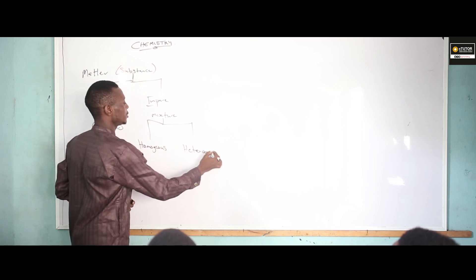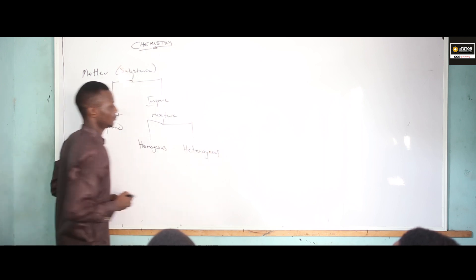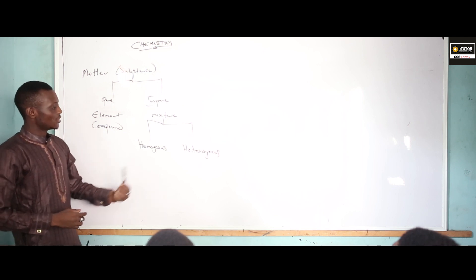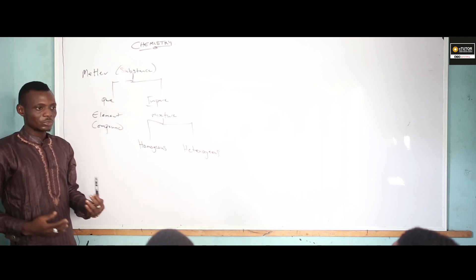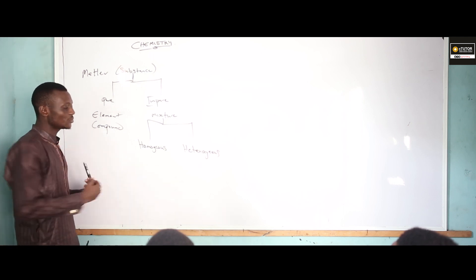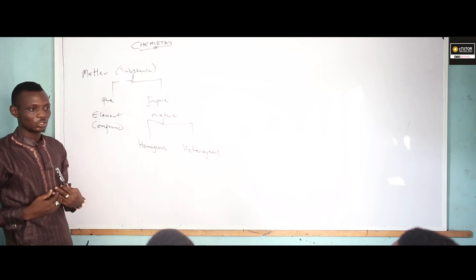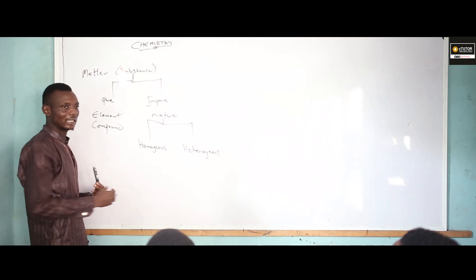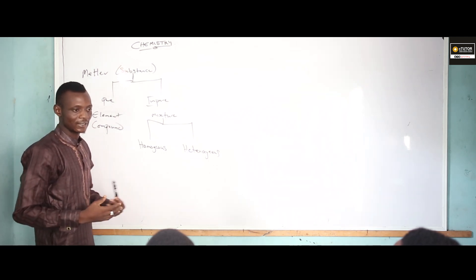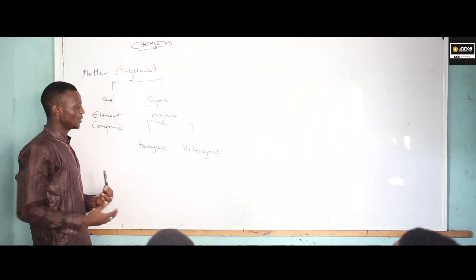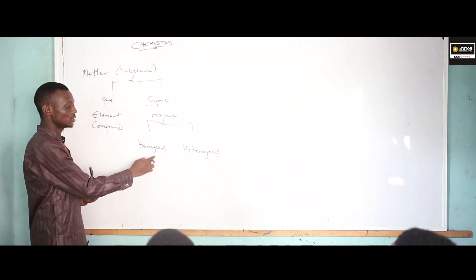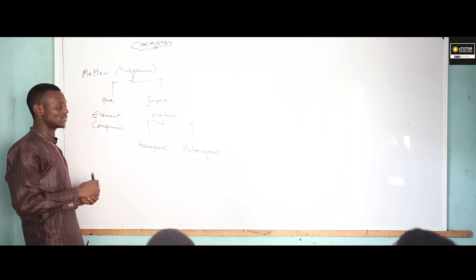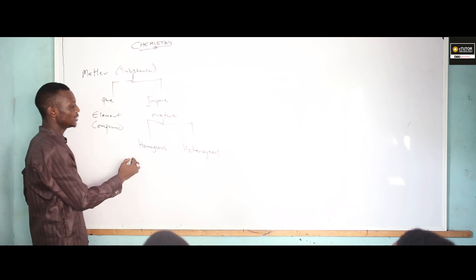From here, a mixture is subdivided into two: we have the homogeneous mixture and the heterogeneous mixture. What is the meaning of homogeneous mixture? Homogeneous mixtures are mixtures which have their constituents in the same phase — that is, in the same physical state.